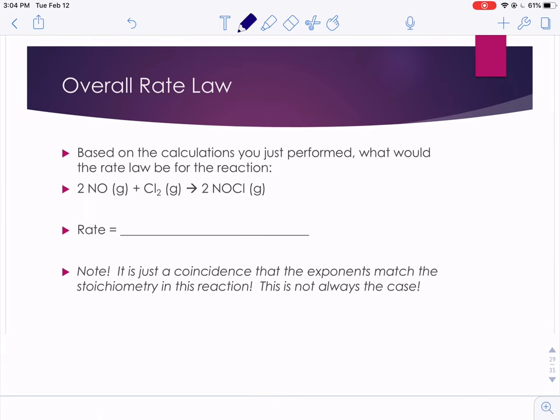Based on these calculations, if we wanted the rate law for that reaction, nitrogen monoxide plus chlorine makes NOCl, we would say the rate equals some rate constant k. It was second order with respect to nitrogen monoxide and it was first order with respect to chlorine.